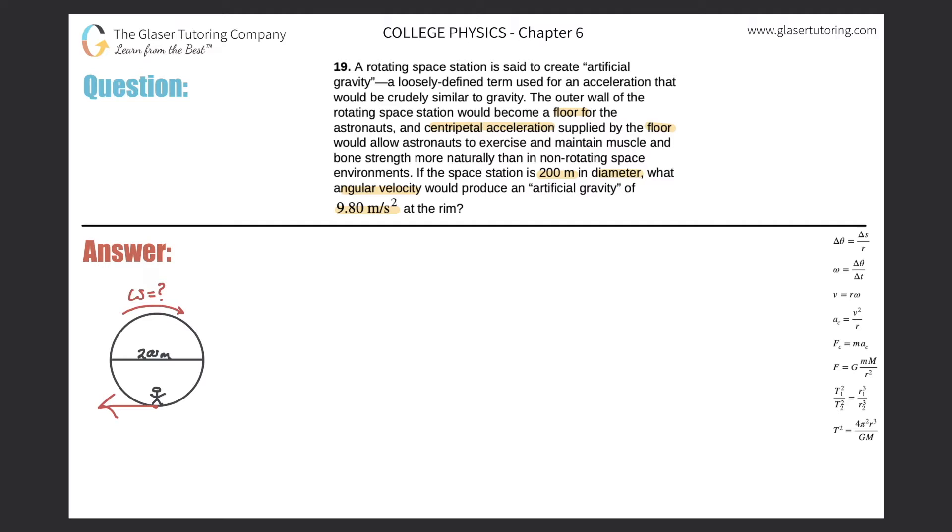So now if the centripetal force points up, the centripetal acceleration also points in the same direction. That's what they're talking about when they're saying that the centripetal acceleration supplied by the floor would allow the astronauts to exercise and do all that stuff because it keeps them grounded on the floor.